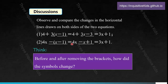Think: before and after removing the brackets, how do the symbols change? By symbols, I mean how did the negative and positive signs change? In the first equation, the sign in front was plus 3 and the term was negative 1, and after distributing it became 3x minus 3. In the second equation, x was inside a negative parenthesis — it was positive inside, but after removing the brackets it became negative, and the negative 1 became positive 1.